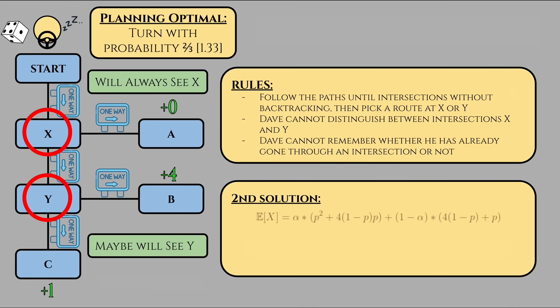Then, the math becomes E(X) equals alpha times, all in parentheses, 1 times P squared plus 4 times 1 minus P times P plus 0 times P, plus, and then, 1 minus alpha times, all in parentheses, 4 times 1 minus P plus 1 times P.